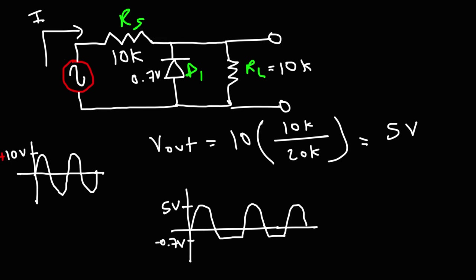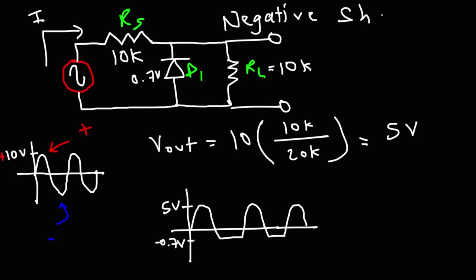Now how would you describe this particular circuit — a positive shunt clipper circuit or a negative shunt clipper circuit? Which part of the sine wave is being clipped, the positive or the negative? We can clearly see that the negative part of the sine wave has been clipped. So this circuit is a negative shunt clipper circuit — the negative part of the input signal was clipped in this example.